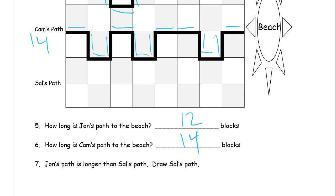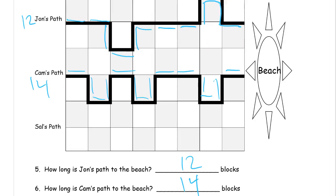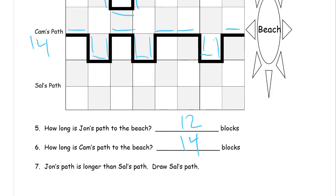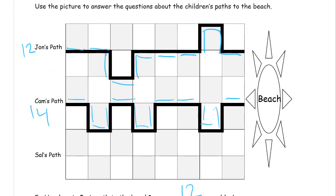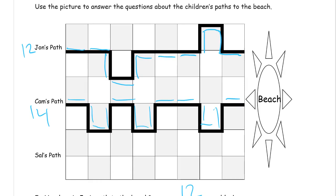And it says, John's path is longer than Sal's path. So then it says, draw Sal's path. John's path is longer. John's path is 12. Sal's path is going to have to be shorter. So Sal's path could just be a straight line. That would be shorter.